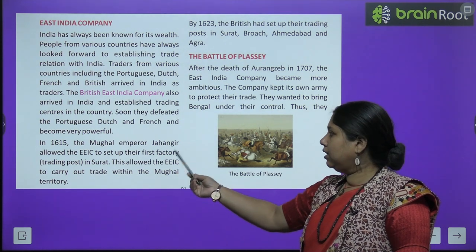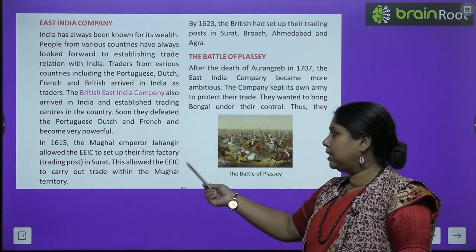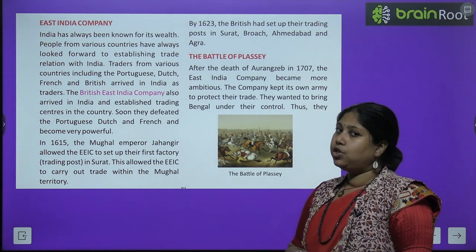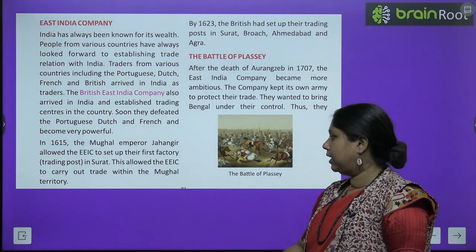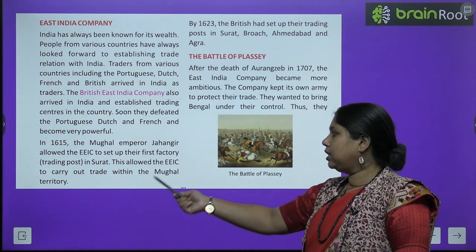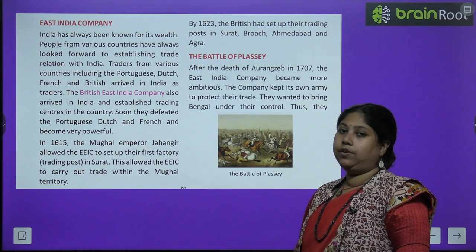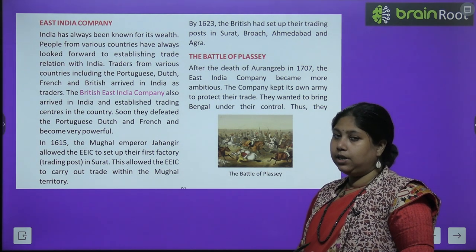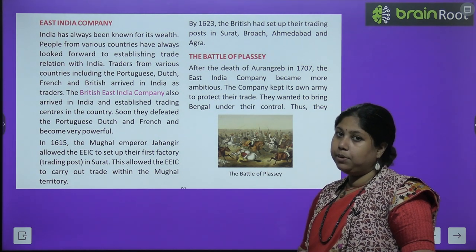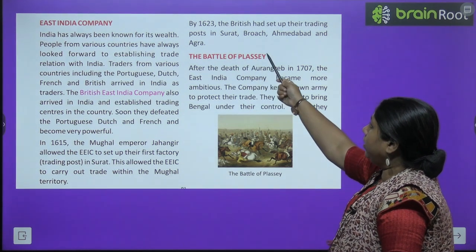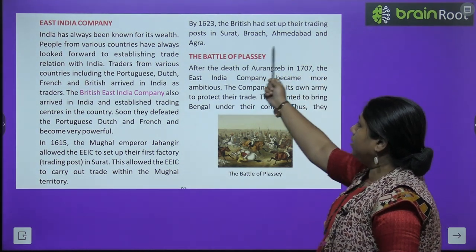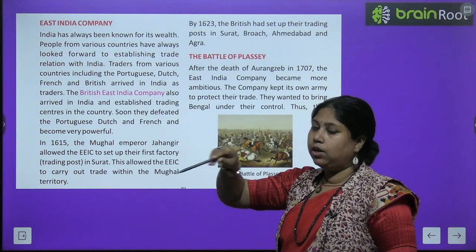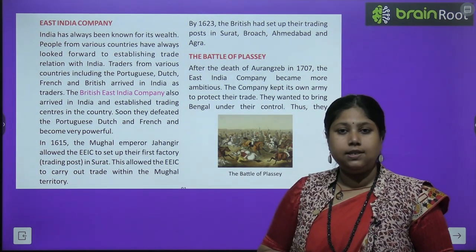In 1615, Mughal Emperor Jahangir allowed the East India Company to set up their first factory in Surat. This allowed the EEIC to carry trade within Mughal territory. By 1623, the British had set up their trading posts in Surat, Broach, Ahmedabad, and Agra — they established small factories in different places.